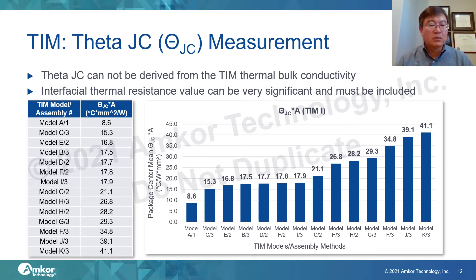Also, for model F, which was assembled with different process conditions number 2 and number 3 — in the case of process number 2, the Theta JC value is lower than with process number 3. This is a very good result to understand team thermal performance on the package. I will explain more details on the next slide.